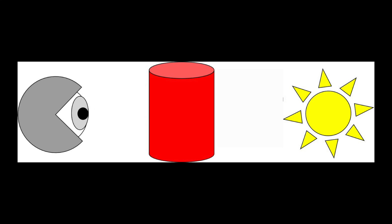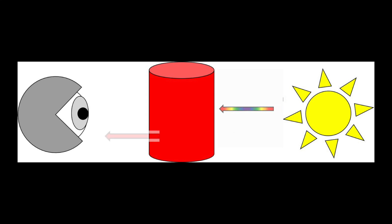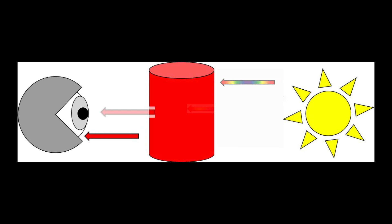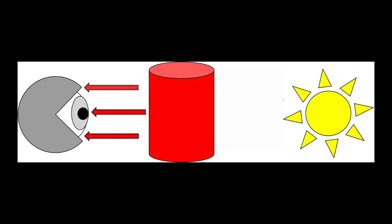Visually, we perceive the color of a chemical solution based upon the wavelengths of light which are absorbed versus transmitted. For instance, a red solution is red because all wavelengths except those in the red region of the spectrum are absorbed, while the red wavelengths are transmitted to and detected by our eyes.